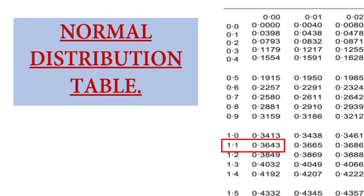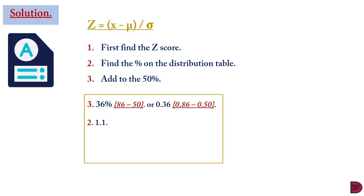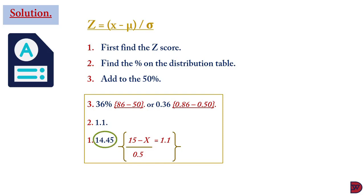We find 0.36 from the distribution table, which gives approximately 1.1 — using 0.363 as an approximation. This 1.1 is the z-score. We now have z = 1.1, the mean = 15, and standard deviation = 0.5, but not x. Substituting into the formula: 1.1 = (x − 15) / 0.5, which gives x = 14.45.